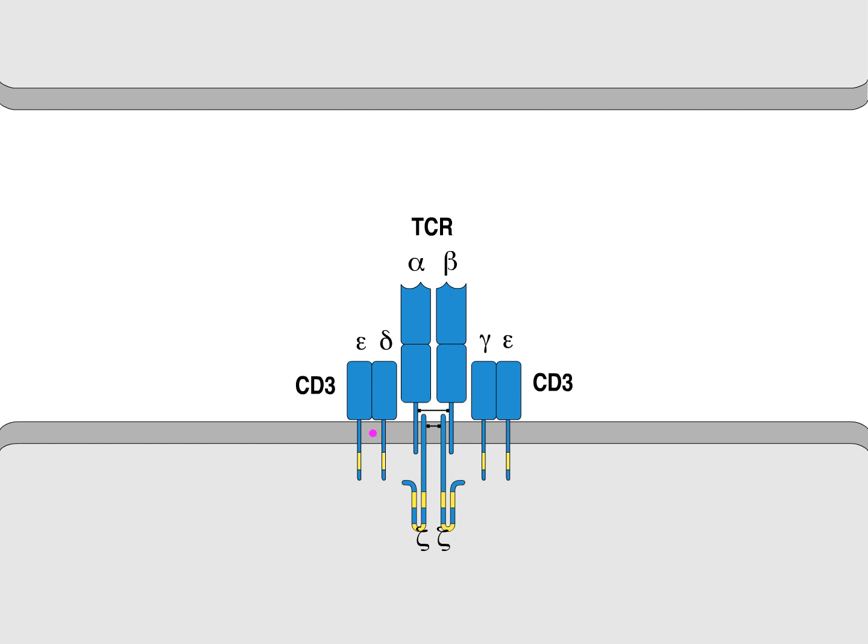Each of the CD3 chains has at least one copy of a signaling motif, the immunoreceptor tyrosine-based activation motif, or ITAM, in its cytoplasmic domain.